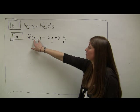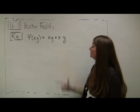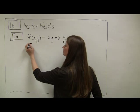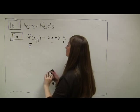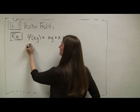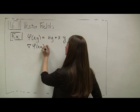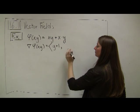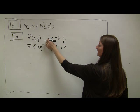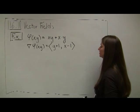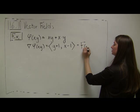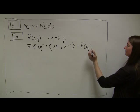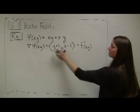Let's say our potential function phi is a real-valued function with inputs x and y — not a vector output. Our potential function phi is given by xy plus x minus y. I want to find the gradient vector field associated with phi. Taking the gradient, the partial derivative with respect to x is y plus 1 for the first component, and the partial derivative with respect to y is x minus 1 for the second component. So capital F of xy is a vector function with inputs x, y, and this is our gradient vector field — it's a vector field that is the gradient of a potential function.